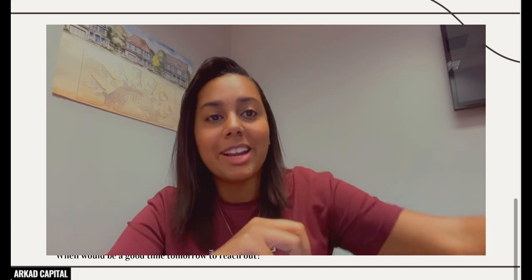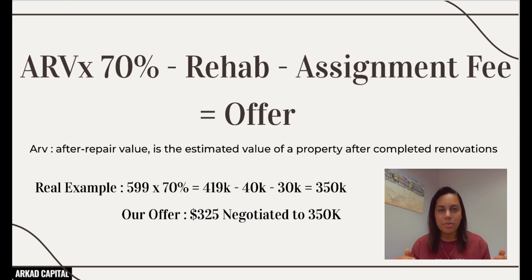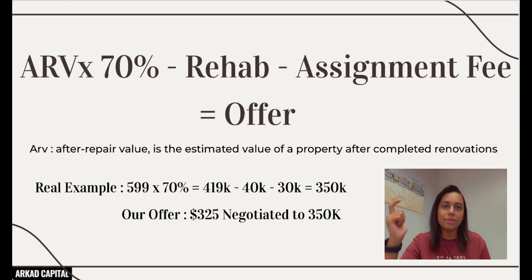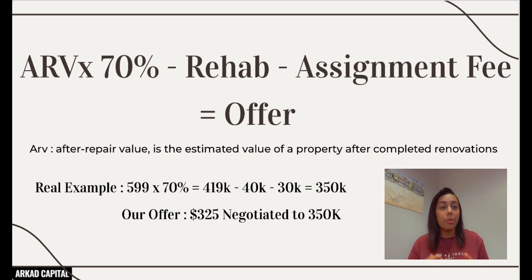Now for making an offer. We use the traditional 70% rule: ARV × 70% − Rehab − Assignment Fee = Your Offer. ARV is the after-repair value — how much the house will sell for when fully fixed up. Find this using PropStream, Batch Leads, or Zillow: look for properties with the same bedrooms, bathrooms, similar square footage, within half a mile to a mile, and see what they sold for when fixed up and on the open market. Get three or four comps, find the average — that's your ARV.